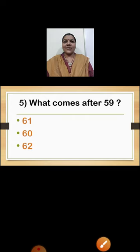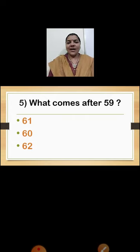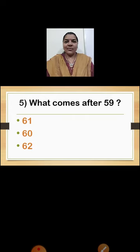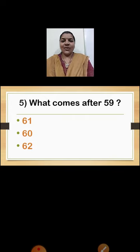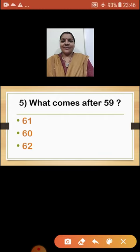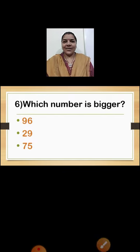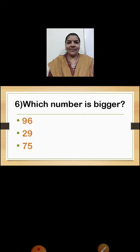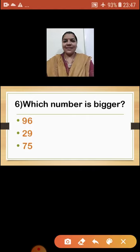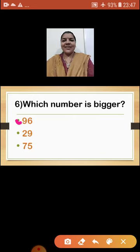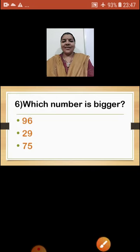Question number 5: What comes after 59? Tell me which number will come after 59 — 61, 60, or 62? The correct answer is 60. Very good. Question 6: Which number is bigger? The numbers are 96, 29, and 75. We are going to put a tick mark on the bigger number. 96 is the bigger number. Very good.